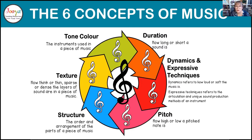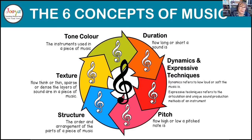Structure, or musical form, is the order and arrangement of the parts of a piece of music. Texture is what we're talking about tonight — it is how thick or thin, or sparse or dense, the layers of sound are in a piece of music. And tone colour refers to the instruments used in a piece of music.